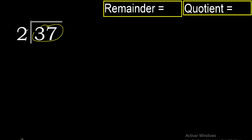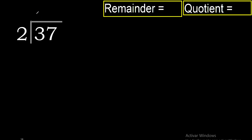37 divided by 2. 3 is not less than 2, therefore with 3: 2 multiplied by 2 is 4 — excessive. 2 multiplied by 1 is 2. 3 minus 2 is 1. Bring down the 7.